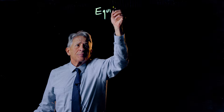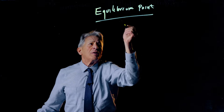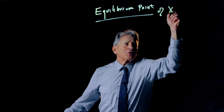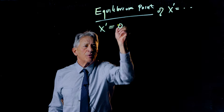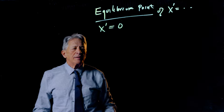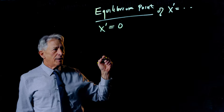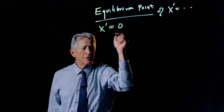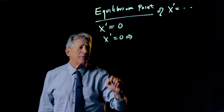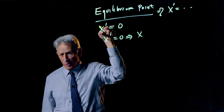We have defined the very important concept of an equilibrium point of a differential equation x' = f(x). They are simply points at which x' equals zero. We find these points by taking the vector field, setting it equal to zero, and asking what values of x make x' equal to zero. Those are the equilibrium points.